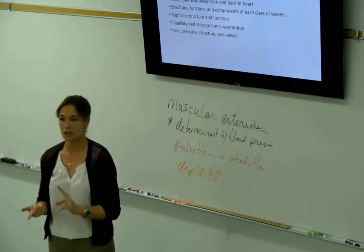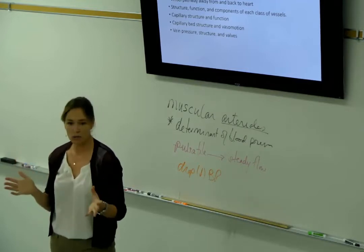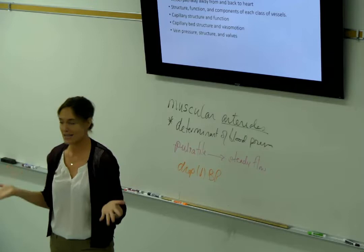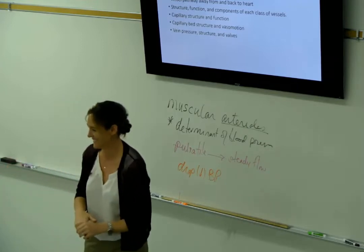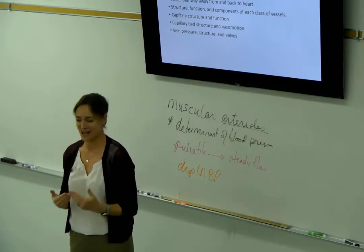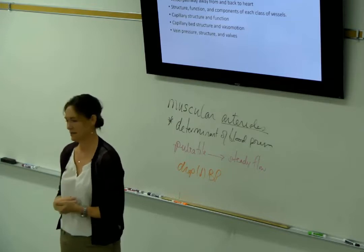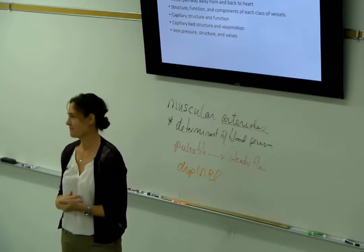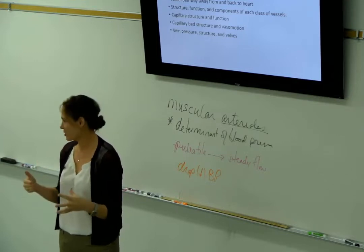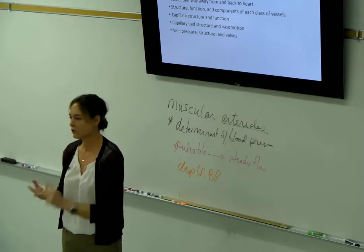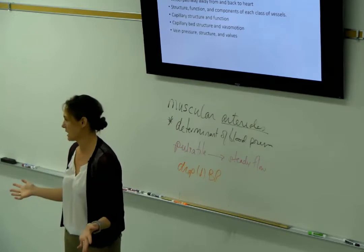Capillary structure and function: capillaries are one cell layer thick, made only of the tunica intima, also known as endothelium. The two types of capillaries are continuous and fenestrated. Fenestrated are just in specialized areas — the choroid plexus makes cerebrospinal fluid, liver and kidneys for filtering. Otherwise, pretty much everything is just a continuous capillary.